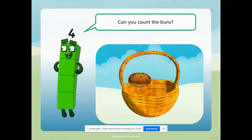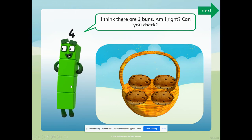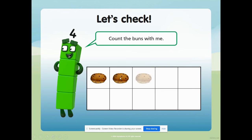Can you count the buns? Mmm, yummy buns. Is that all of them? Let's have a look. One, two, three, four. Four buns. Number block four says, I think there are three buns. Am I right? Is he right, children? What did we count? We counted four, didn't we? So is he right? No, number block four, you're not right. Can we check? Let's count - one, two, three, four. Four buns, number block four. You needed one more bun - three and one more bun makes four buns. Let's check. One, two, three, four. That's it.